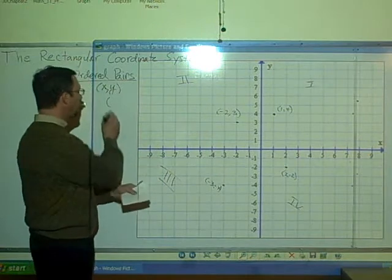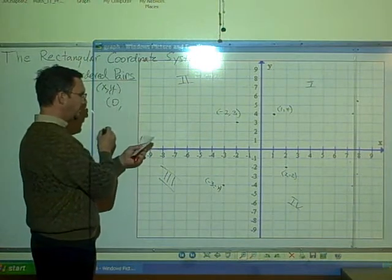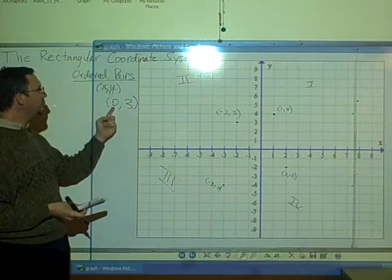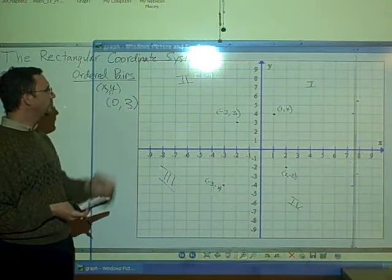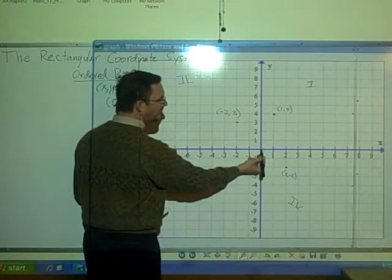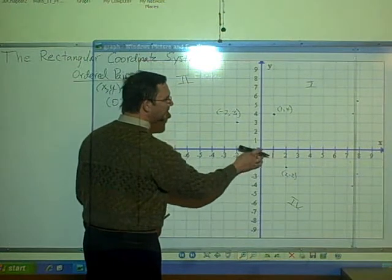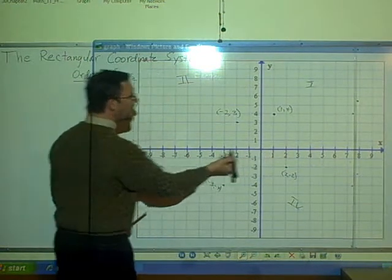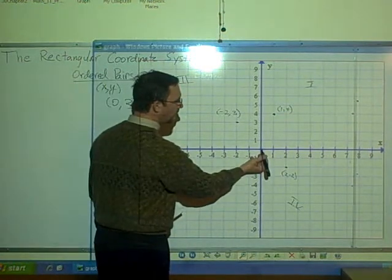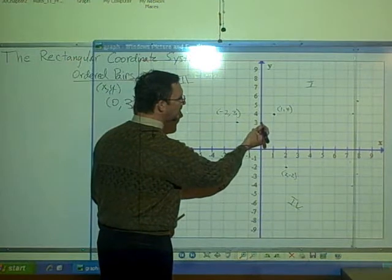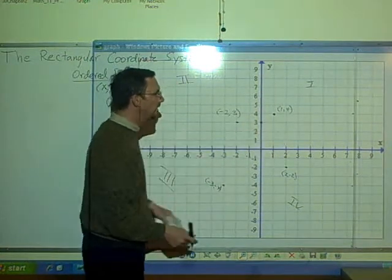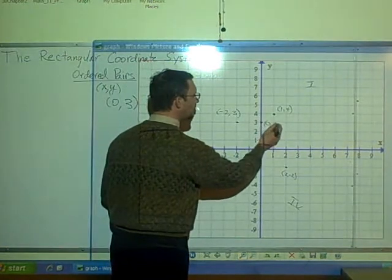Let's look at some more examples. Consider the x, y point 0, 3. For 0, 3, x is equal to 0, y is equal to 3. So if x is 0, then as I'm on the x-axis, I don't move to the left or to the right. But I stay right here. So the only thing I have to do is to move up to x equals 3. So from here, I go up 1, 2, 3. So this point, which is a point on the y-axis, is the point 0, 3.